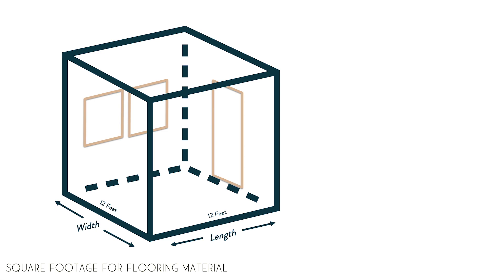In our example, we know that we have 144 square feet, so we would multiply that number by 1.1 to give us the extra 10%. That gives us 158.4. So let's just round up and say we need enough flooring material to cover 160 square feet for this room.